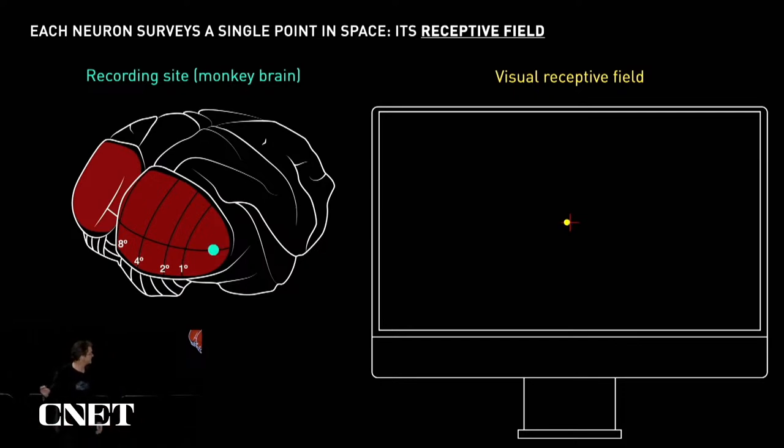If you record from one of these cells in a monkey, in this location, you can find a very tiny region of the screen where a light stimulus will cause modulation of that neuron. Another location in visual cortex will have a location elsewhere on the screen, in this case in the lower visual field. These regions are called receptive fields.